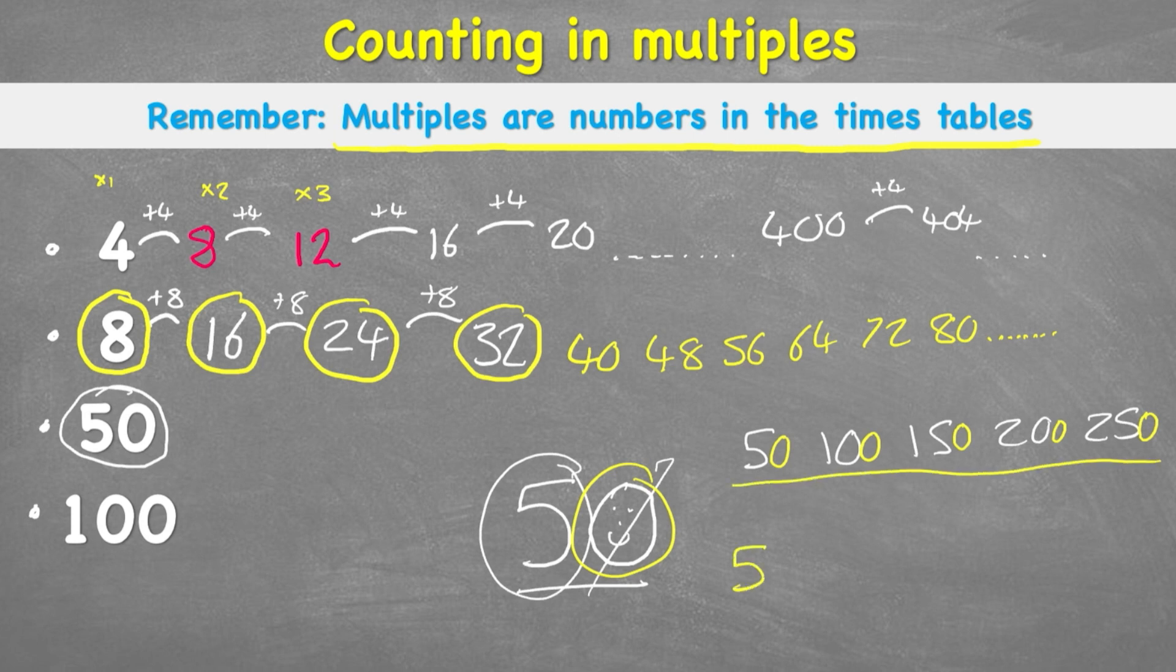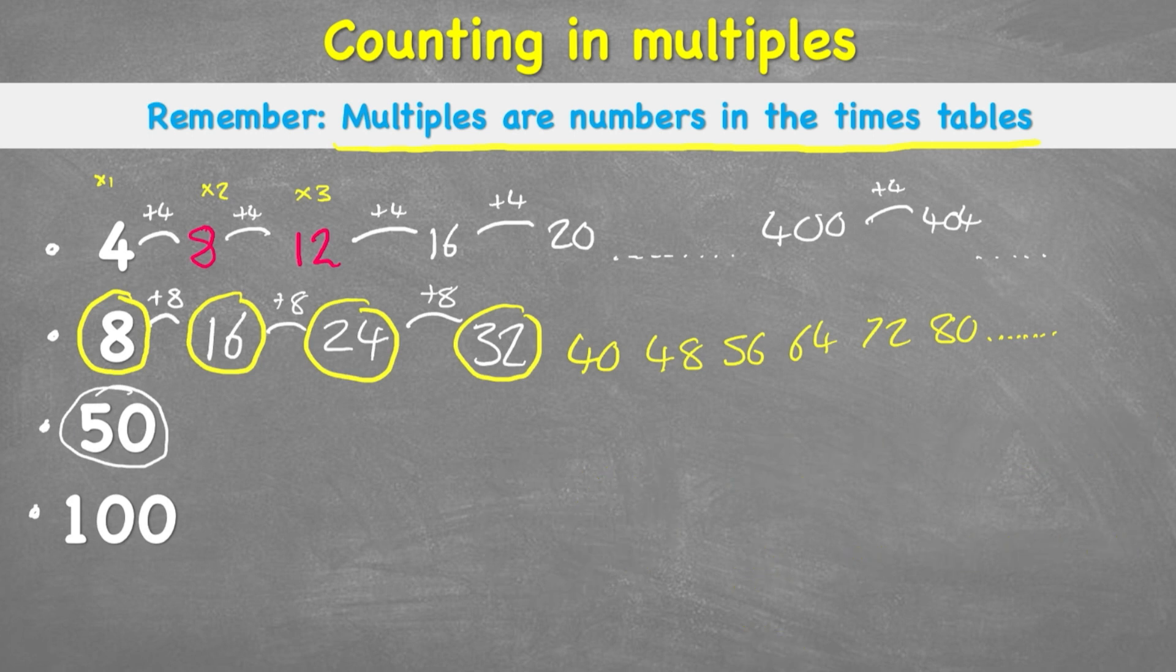Or we could just think 50, 50, 100, 150, 200, 250, 300. It's pretty easy to add up because we're just working with 50s. So therefore the first 5 multiples of 50 would be 50, 100, 150, 200 and 250. But don't forget these could go on forever.